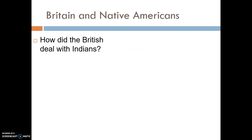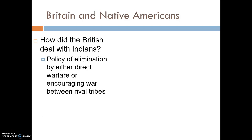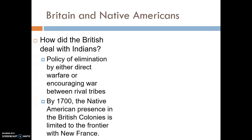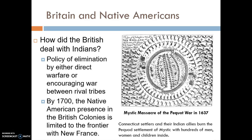Britain and Native Americans. The British dealt with the Native Americans through a policy of elimination — they wanted to wipe them out by either direct warfare or by encouraging war between rival tribes. By 1700, the Native American presence in the British colonies was really limited to the area of the frontier with New France.